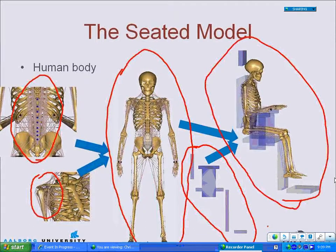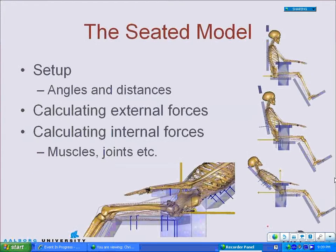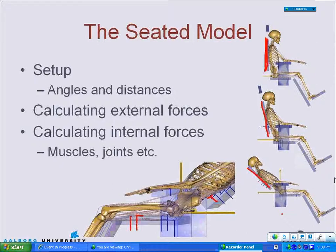We can set up the chair so the backrest leans back, and the body moves with the chair. When you do an inverse dynamic analysis, the external forces acting between the human body and the chair are calculated — represented by blue lines on screen. Internal forces — those produced by the muscles and the reaction forces in the joints — are also calculated. So we have both external and internal forces calculated.